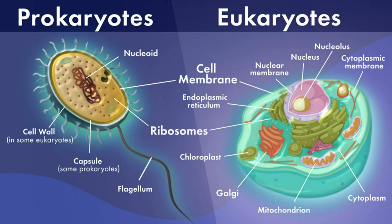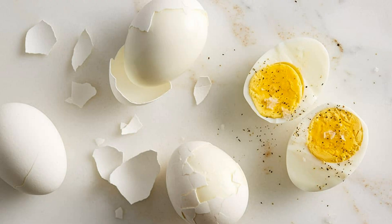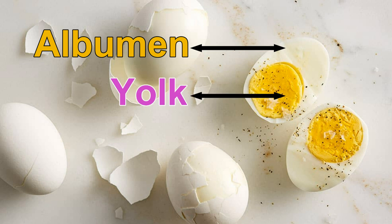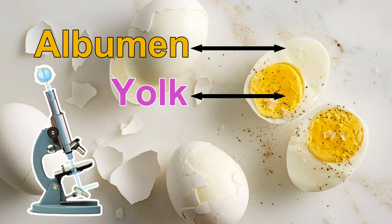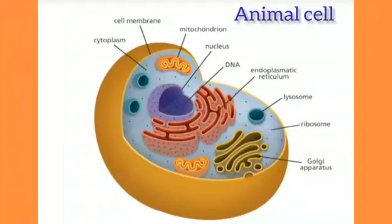In the cells of amoeba, animals, and plants, a well-defined nucleus covered by a membrane is seen. These organisms are called eukaryotes. Let us see one activity: boil a hen's egg and remove the shell. What do you observe? A white material surrounds the yellow part. The white material is albumin, which solidifies on boiling. The yellow part is the yolk — it is part of a single cell. You can observe this single cell without any magnifying device, such as a microscope.